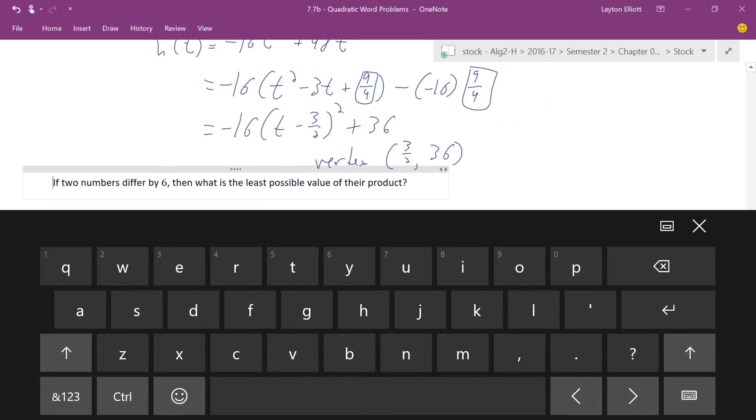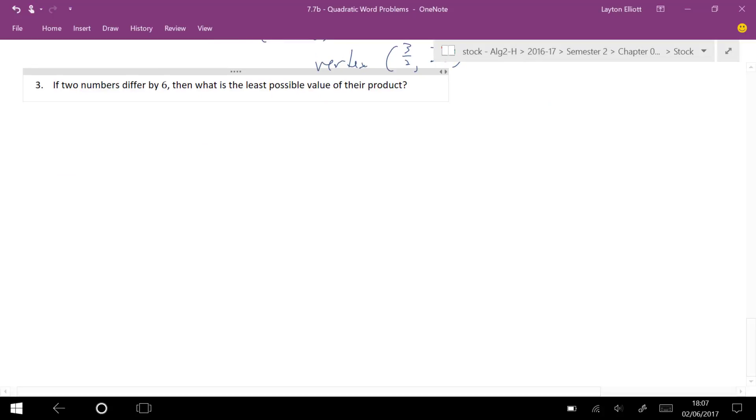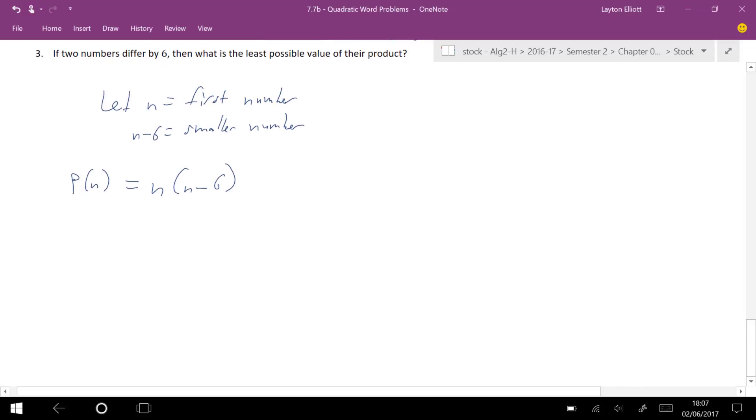Okay, last one, and let's reassign this number 3 or that will bother me, probably you too. If two numbers differ by 6, what is the least possible value of their product? Well, let's let n equal the first number, and I can do n minus 6 equal the smaller number. So n times n minus 6 is equal to the product, and I'm kind of creating a function that's the product.